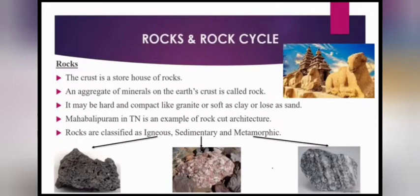The crust is a storehouse of rocks. The crust is the outer layer of the earth. An aggregate of minerals on the earth's crust is called rock. Aggregate means the total amount of minerals. It may be hard and compact like granite, or soft as clay, or loose as sand. Mahabalipuram in Tamil Nadu is an example of rock-cut architecture.